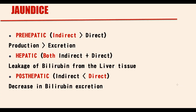Sometimes bilirubin levels can increase. This condition we call jaundice, and we have three patterns of jaundice. The first pattern is increased mostly in indirect bilirubin, also classified as prehepatic jaundice. To explain the patterns of jaundice, let's make a simplified scheme.